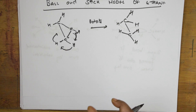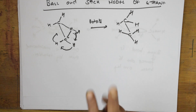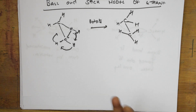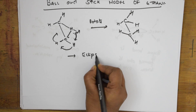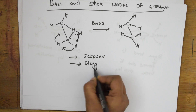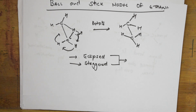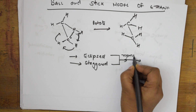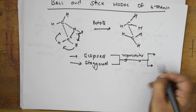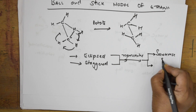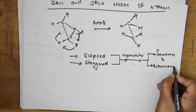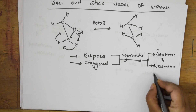Out of the infinite conformations, there are two extreme or perfect conformations in your 11th syllabus: the eclipsed form of conformation and the staggered form of conformation. These eclipsed and staggered forms are represented by sawhorse projection formulas and Newman projection formulas — both of which I'll be showing you.